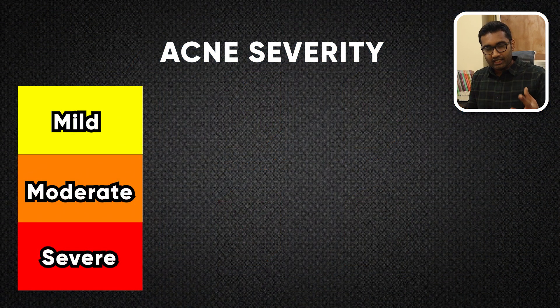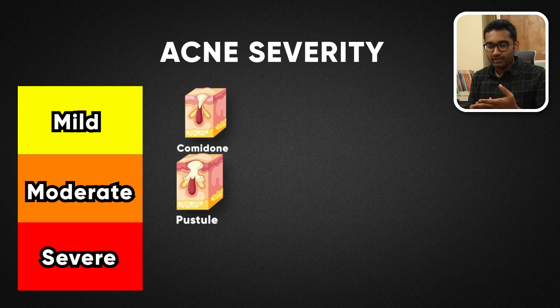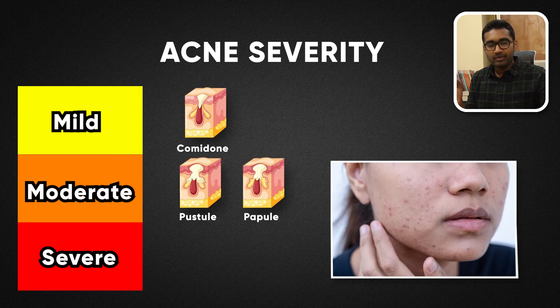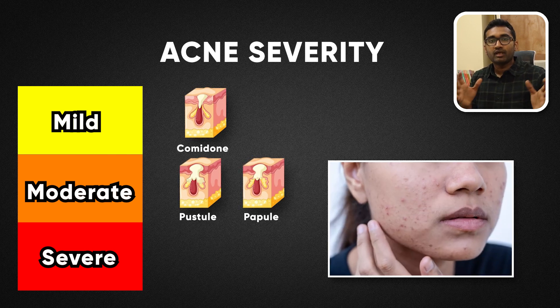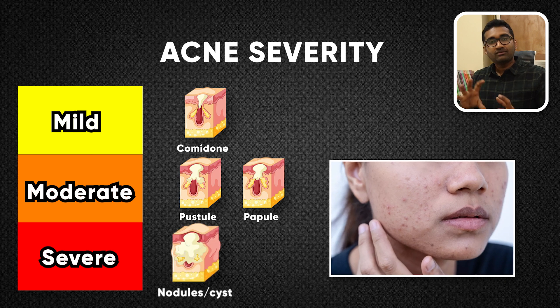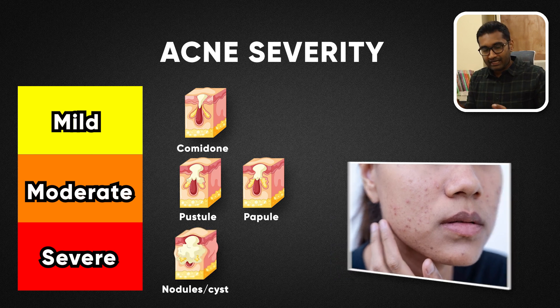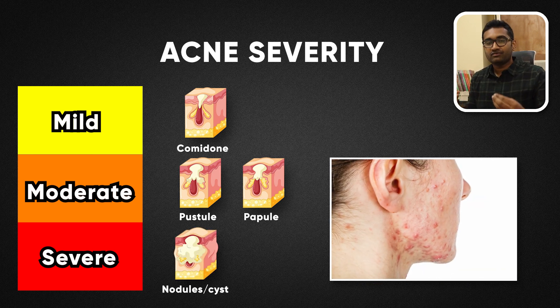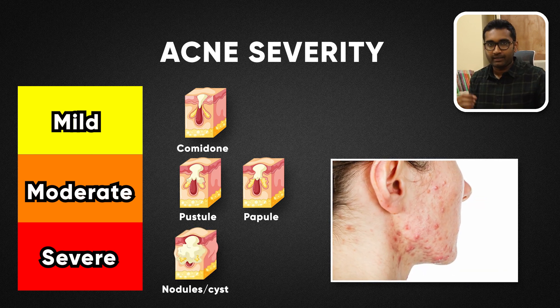So the keratinous plug forms a micro-comedone, which progresses to comedone, then papule, pustule, and severe nodular cystic acne. When the severity of comedones, papules, and pustules are less than a certain threshold, this is called mild to moderate acne. Once nodular cystic acne develops, it is a severe form of acne.